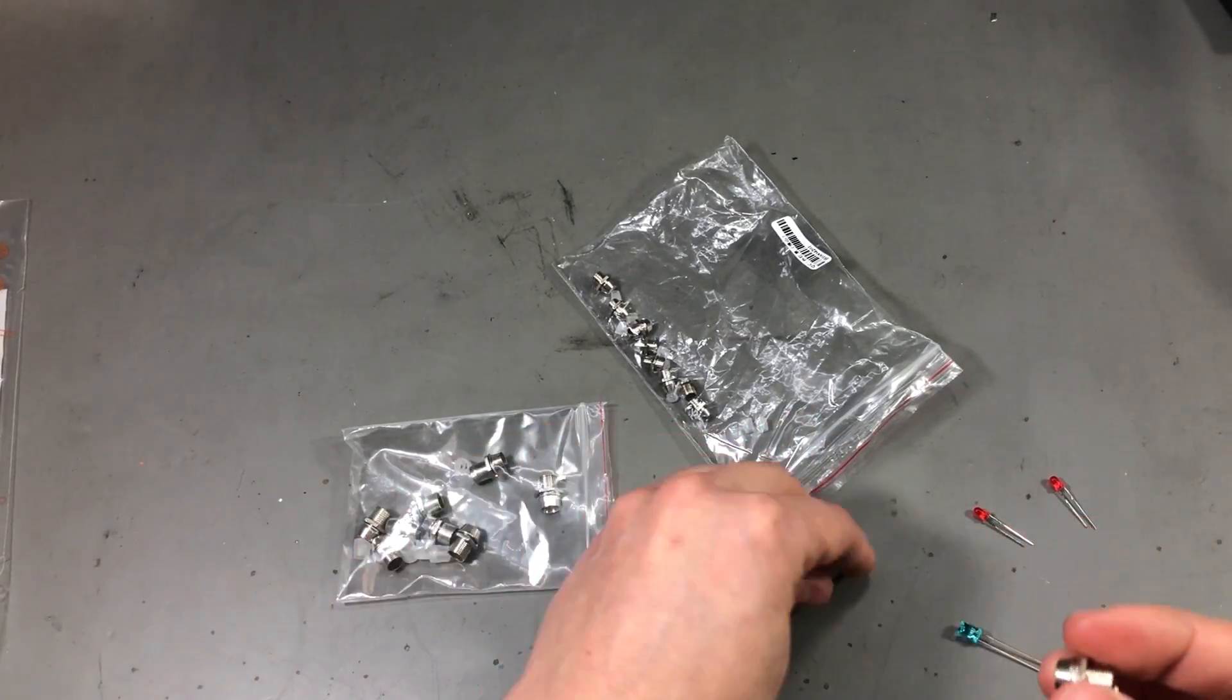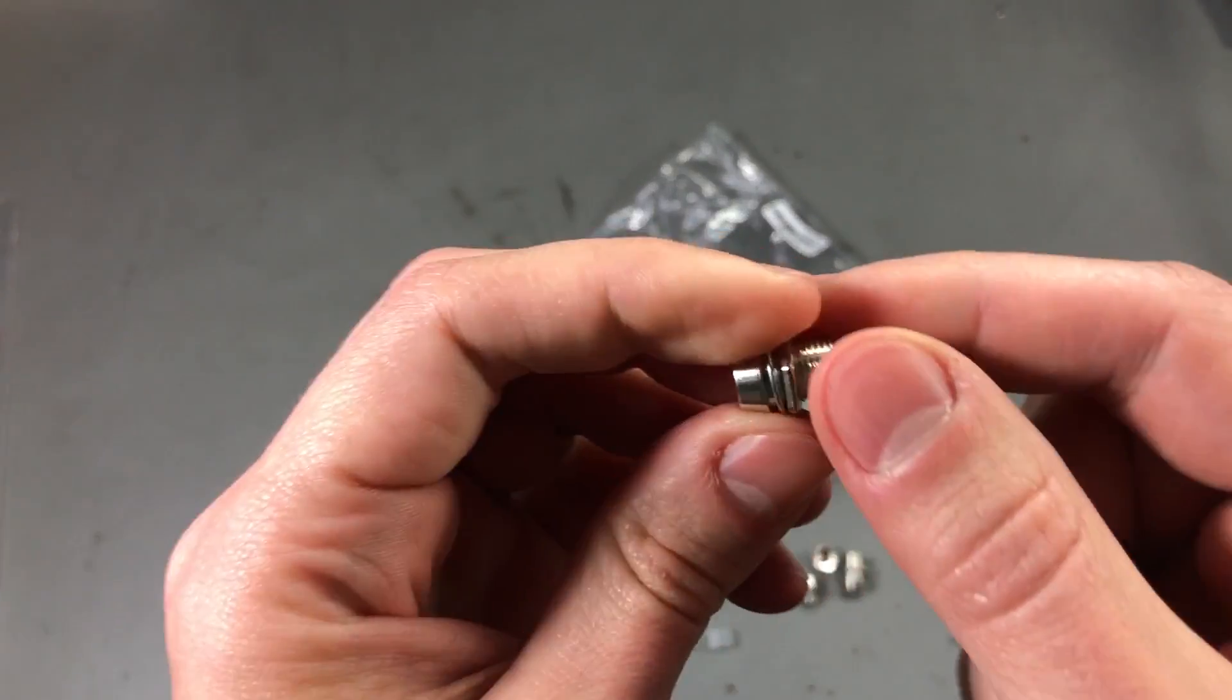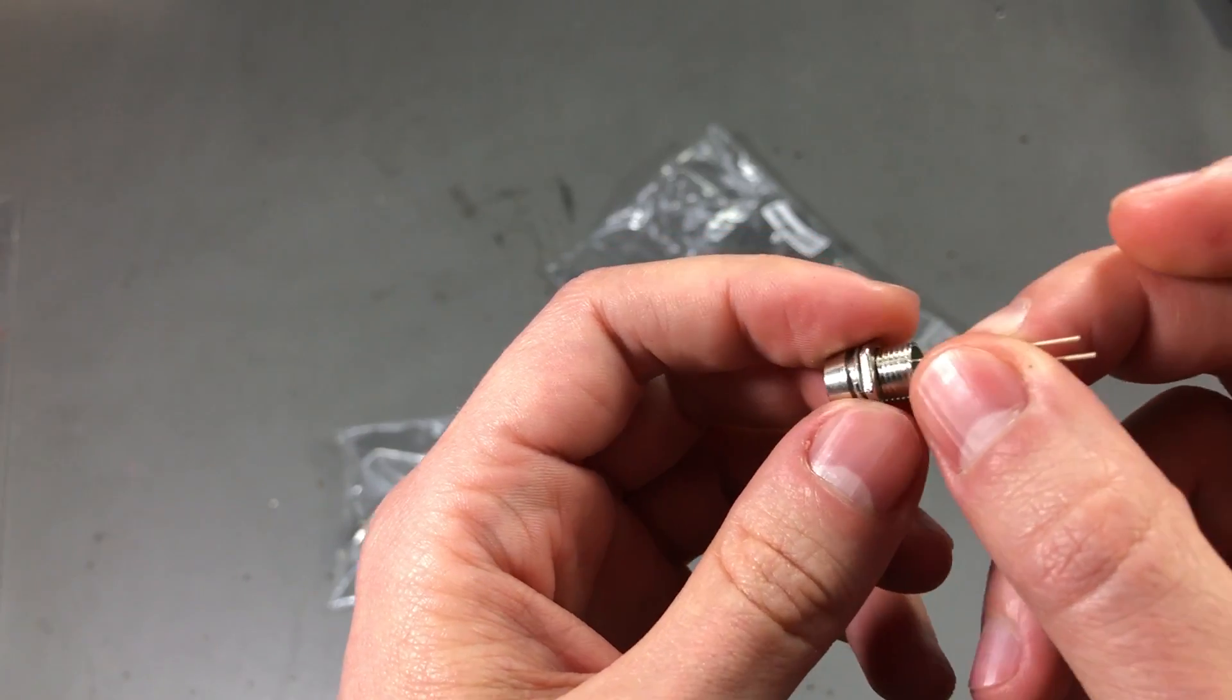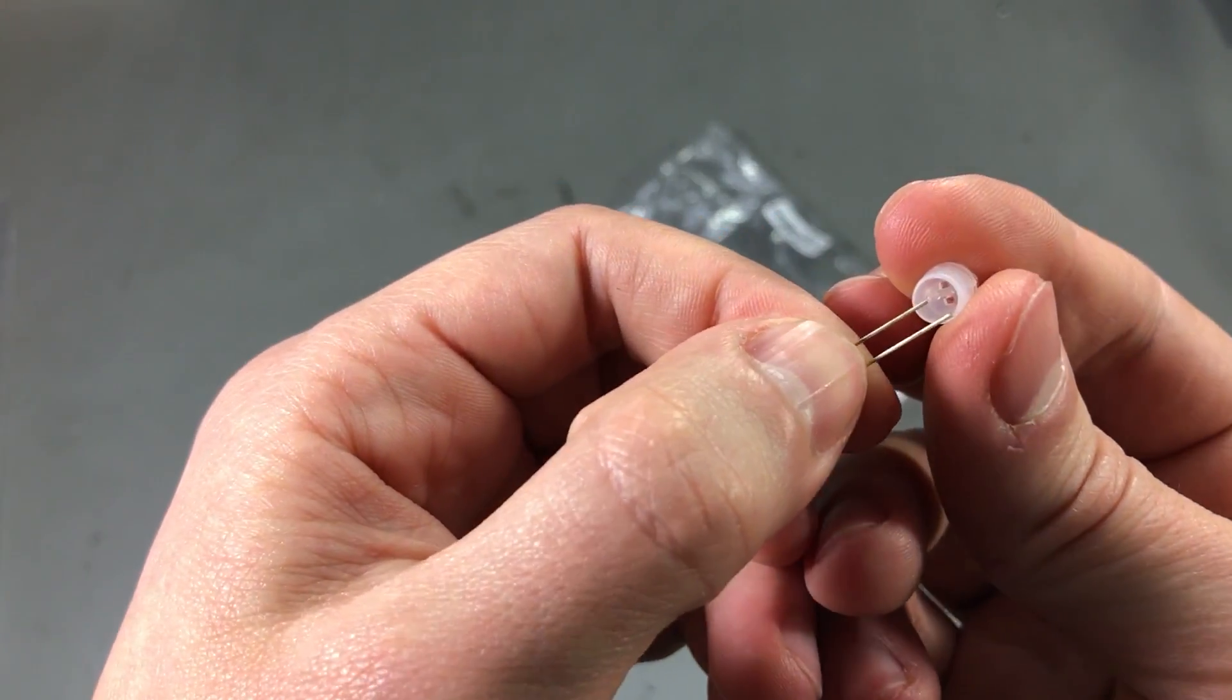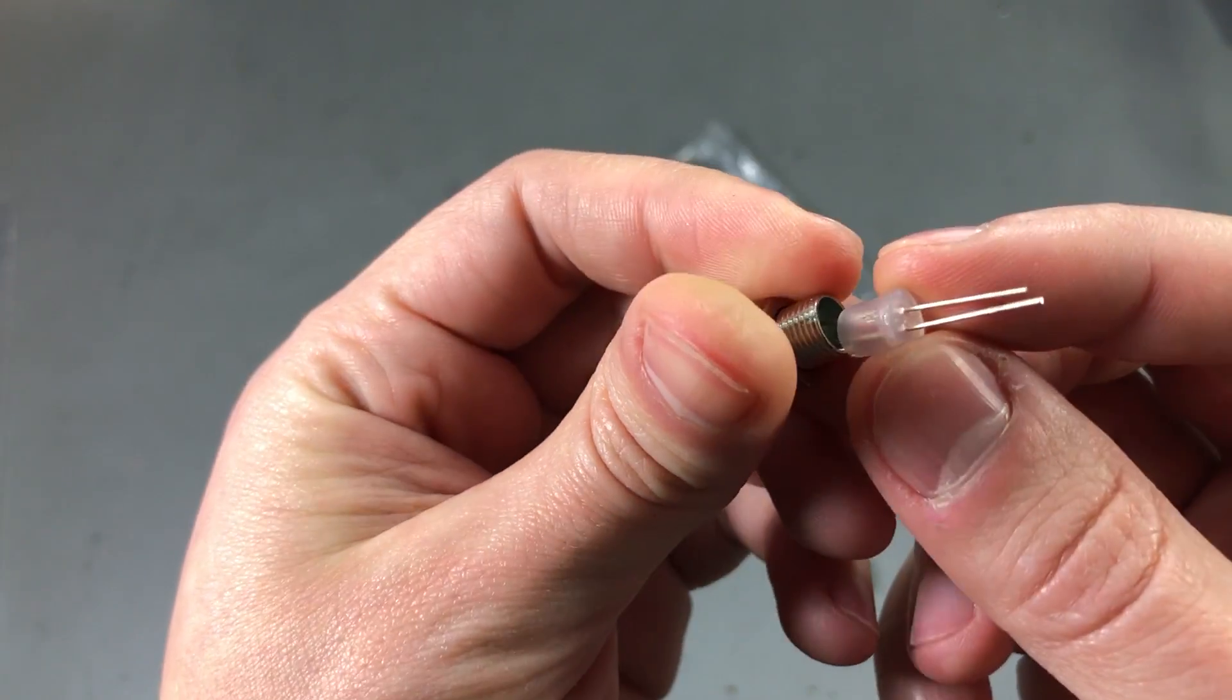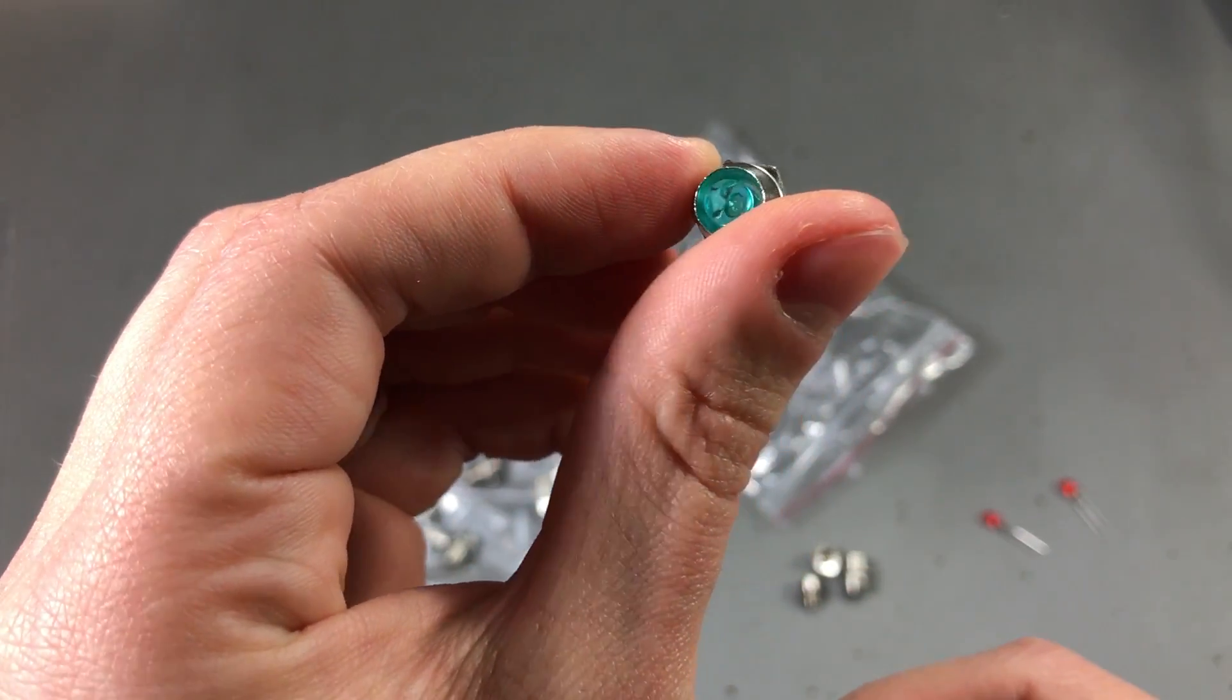So let me show you how you would connect something like this. Let's take the 5mm one for example. You would drill this hole on your front panel, you would install this using the locking nut, the LED goes in through the back and then you have one of these plastic mounting pieces like the LED needs to go through this. And this is what locks the LED in place on the front panel. And the same for the 3mm one.